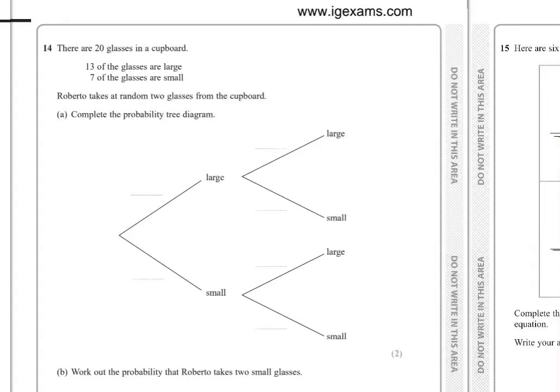Number 14: There are 20 glasses in a cupboard. 13 of the glasses are large, 7 of the glasses are small. Roberto takes at random two glasses from the cupboard. Complete the probability tree diagram. For the first glass, the probability to be large is the number of large, which is 13, over the total, so 13 over 20.